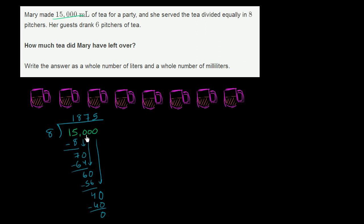So if we divide 15,000 milliliters into eight equal sections, each pitcher is going to have exactly 1,875 milliliters. So that's 1,875 milliliters. But that's not what they're asking us for. They tell us that her guests drank six pitchers of tea, and how much tea did Mary have left over?